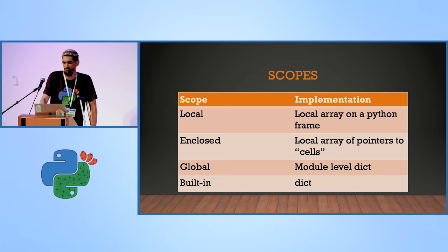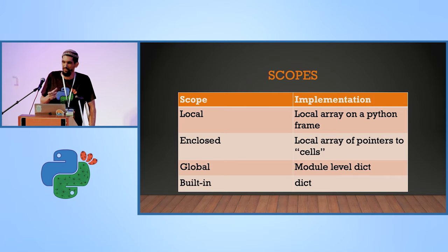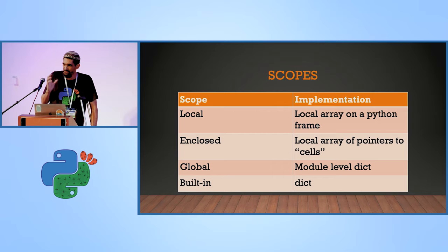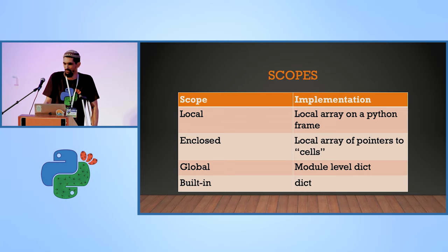You need a pointer to a cell that holds a pointer to some value that can change. So you have a level of indirection, but performance-wise it's almost the same as local. It's just an implementation detail to enable viewing changes, because the local scope can be an array because only the function can change it. The closed scope can be changed from both places. The global module scope is just a normal dictionary — well, there are different heuristics and hash collision changes — but basically it's a Python dict. The built-in module is also a dict, implemented in C, but it's another dict.